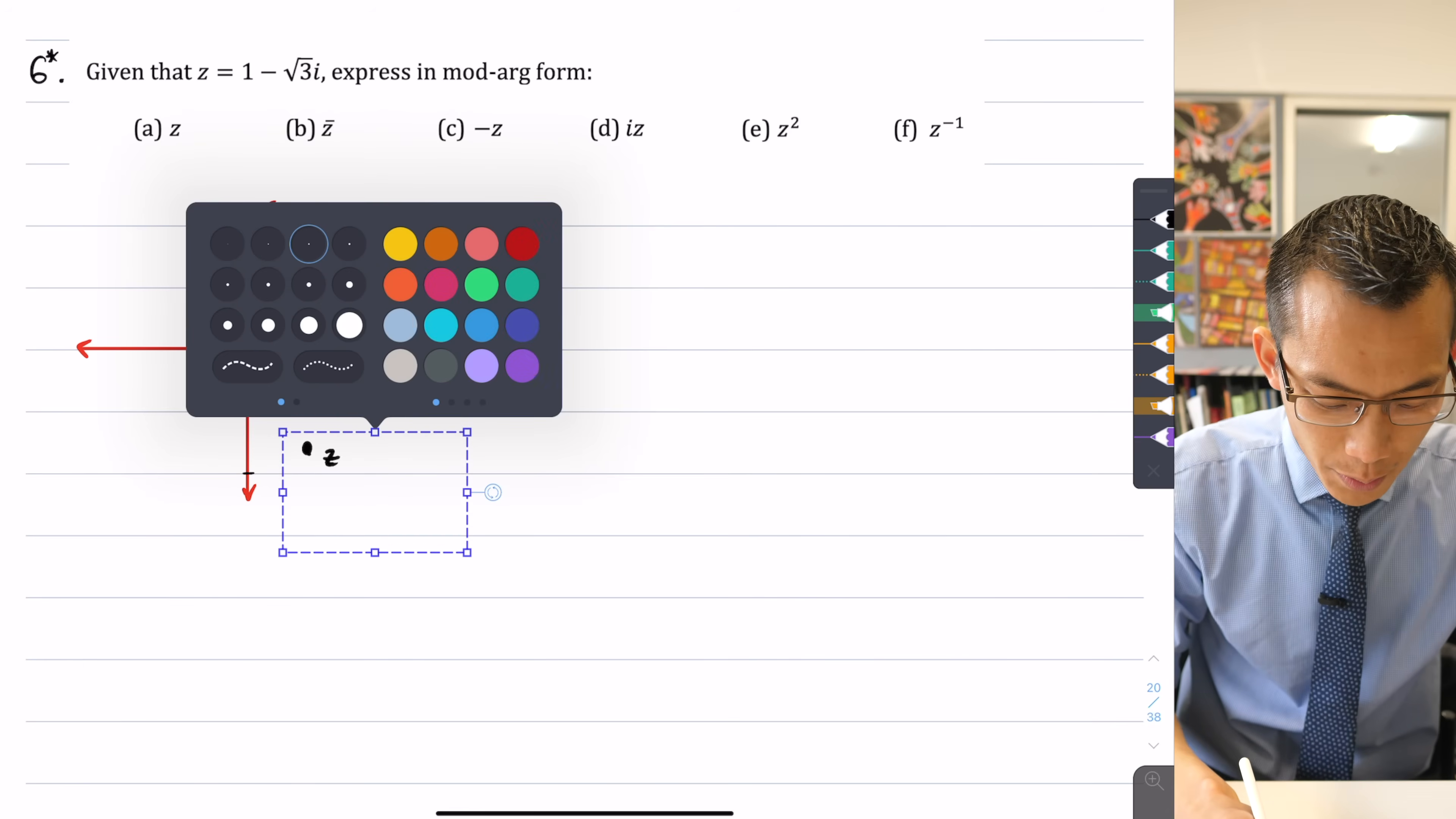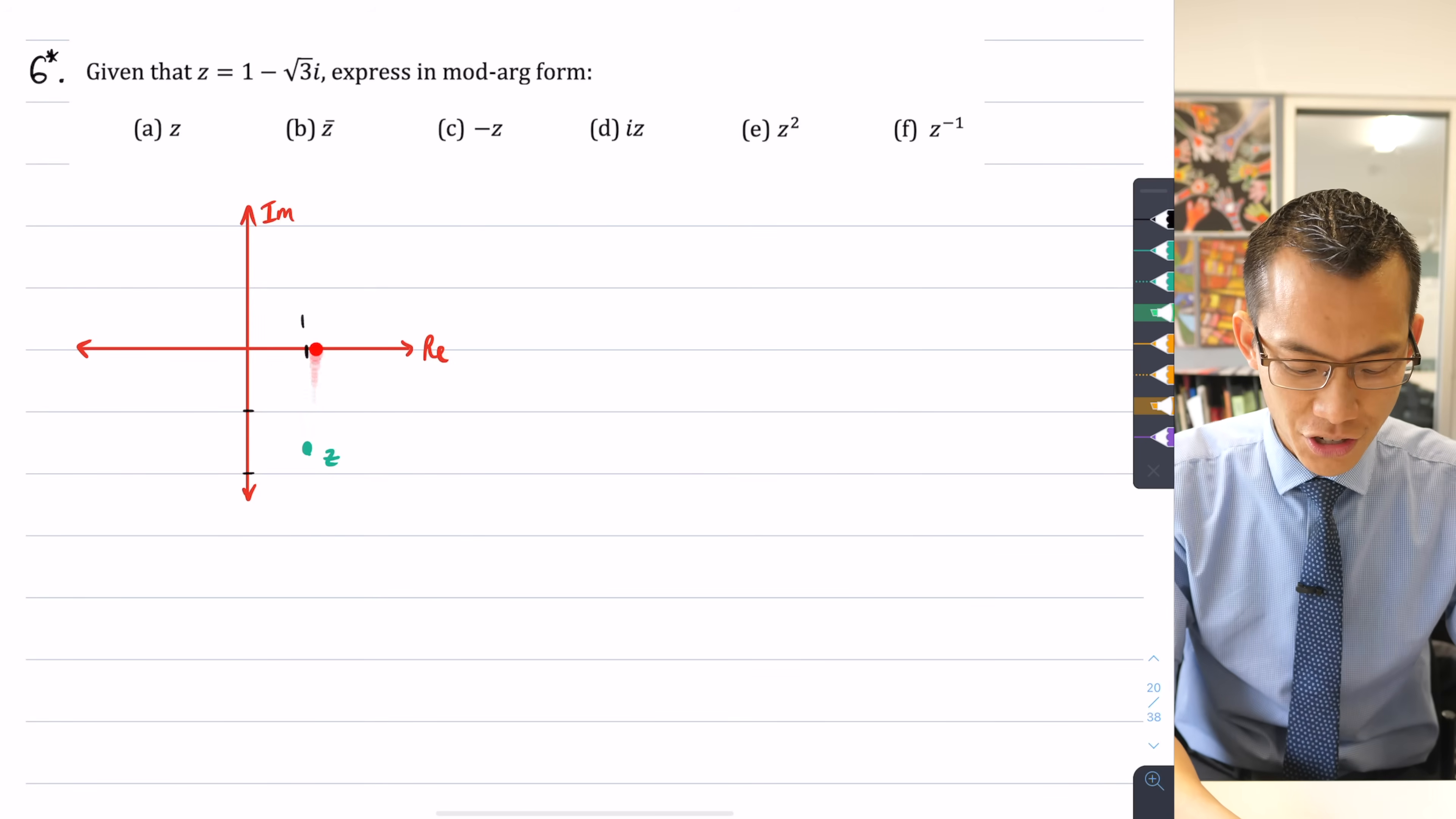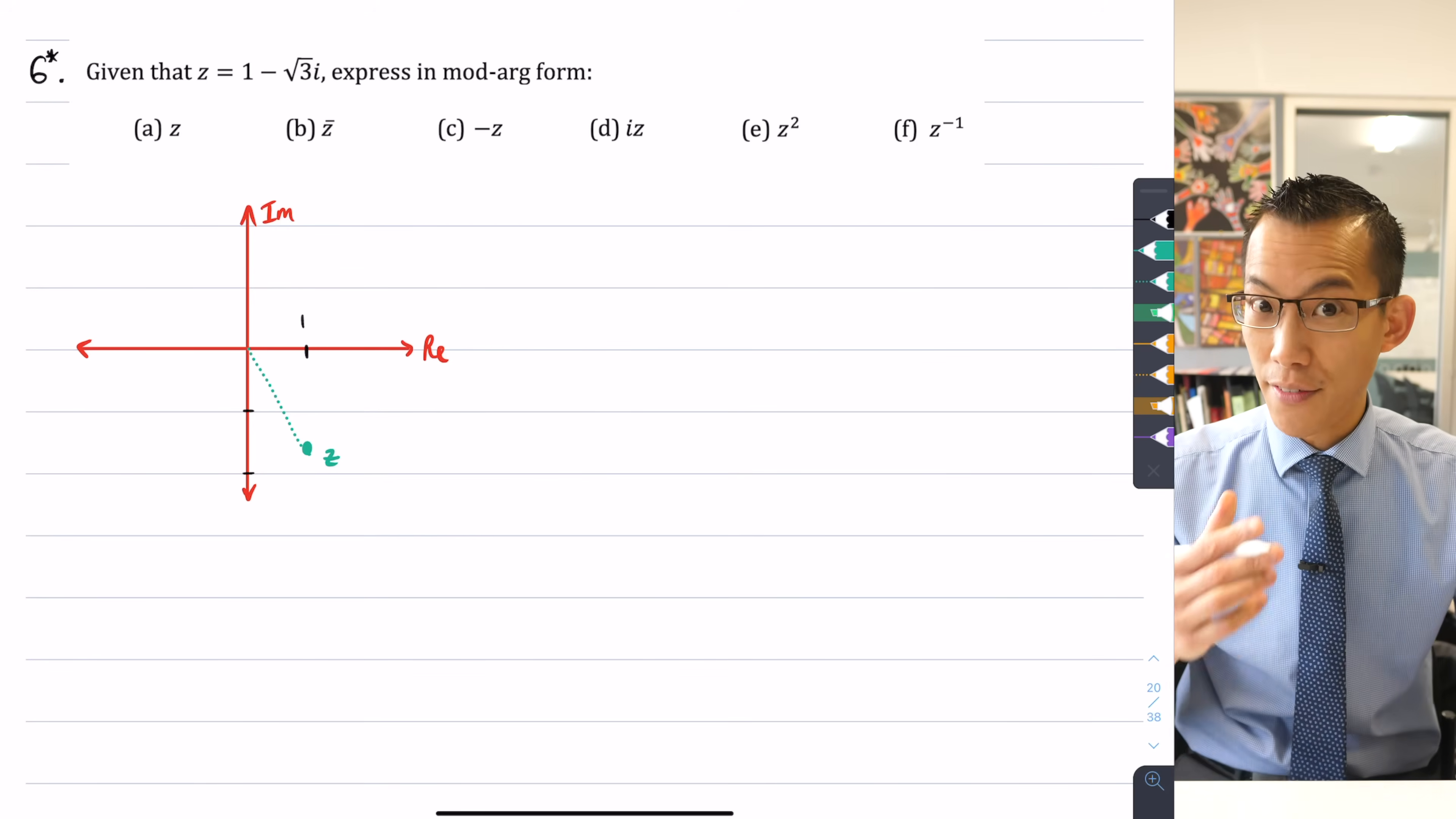So this is where I'm going to place z and I want to express where z is, not just in terms of its rectangular form. As we just said, it's one unit to the right and then it's root three units downwards on the imaginary axis, the imaginary direction.